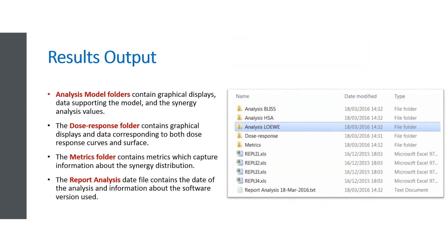Once the analysis is completed, all the results will be saved in several new subfolders in the same folder of the original input files. The Analysis Model folders contain graphical displays, data supporting the model, and the Synergy Analysis values. The Dose Response folder contains graphical displays and data corresponding to both dose response curves and surface, including the measured effects for the two drugs used as single agents and in combination. The Metrics folder contains metrics which capture information about the Synergy distribution, such as maximum, minimum synergy, and more. The Report Analysis Date file contains the date of the analysis and information about the software version used.